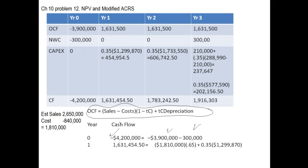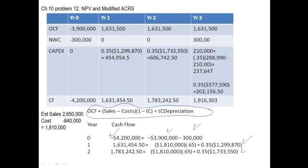In year one, we use the depreciation amount calculated above times the tax rate. In year two, we're using the depreciation amount of $1,733,550 — again, what we calculated above — times the tax rate.